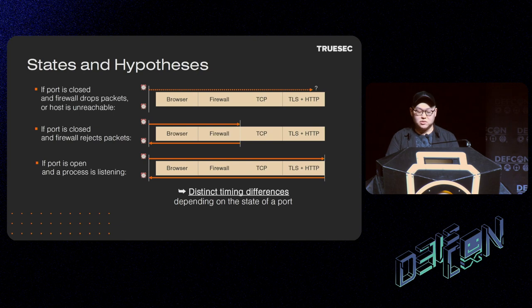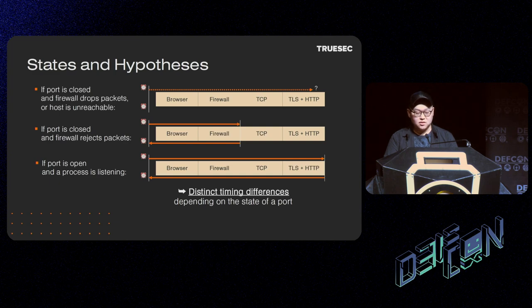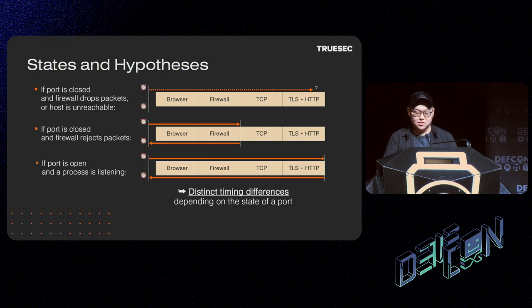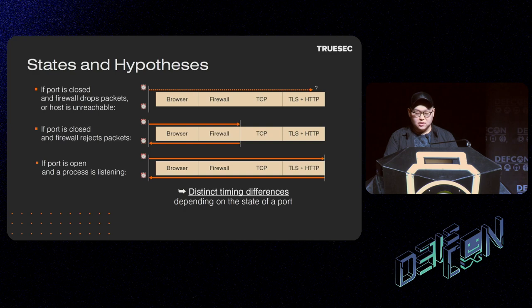We can think of three possible states of a port and hypothesize which components would take up the observed round trip time. Firstly, if the port is closed and the firewall drops packets or the host is unreachable, the observed time would be theoretically infinite, but typically an arbitrary timeout would be enforced. Secondly, if the port is closed and the firewall rejects packets, the browser and the firewall would take up the observed time. Finally, if the port is open and the process is listening, the browser, the firewall, the TCP, and the TLS plus HTTP would take up the observed time. Looking at the hypothesis, we can expect distinct timing differences depending on the state of a port.